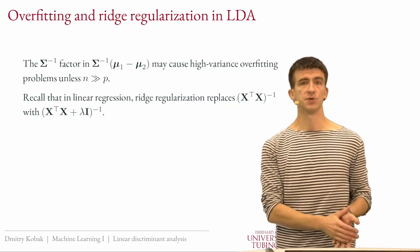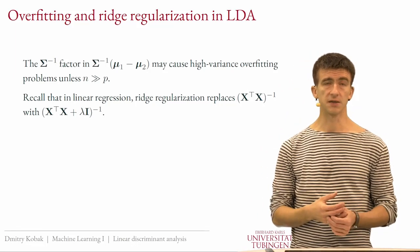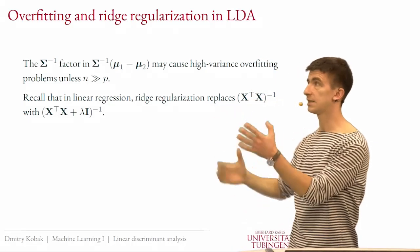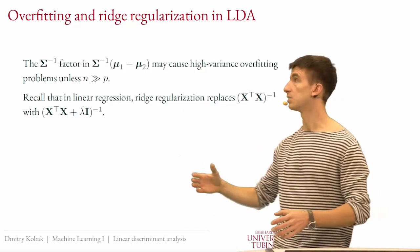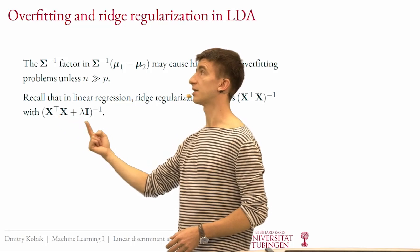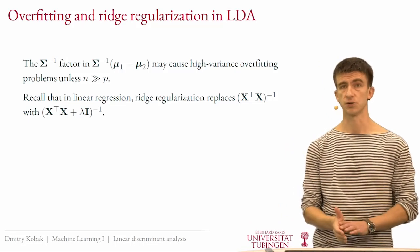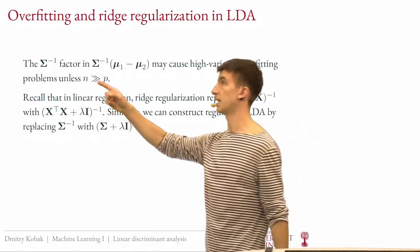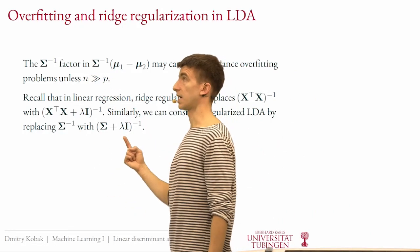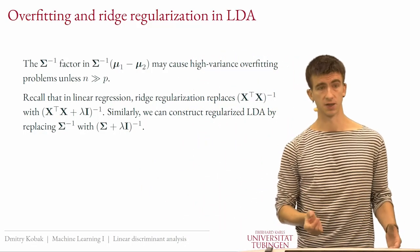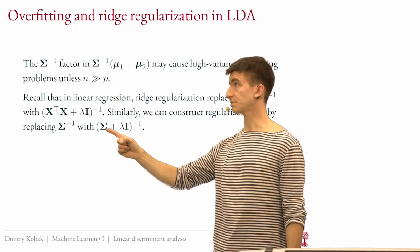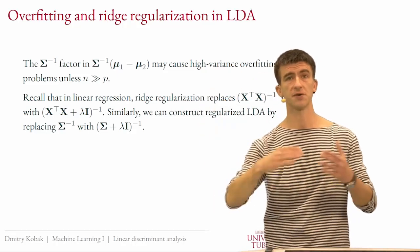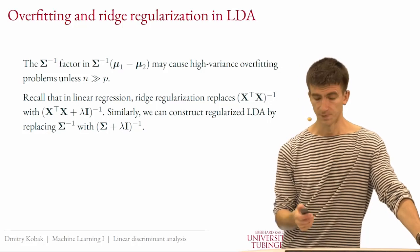We can use the same logic as ridge regularization in linear regression. There, adding λI inside the brackets fixed the problematic inverse. We can do the same here: replace Σ with (Σ + λI) before inverting. This ensures small eigenvalues are no longer so small, preventing the variance from exploding.